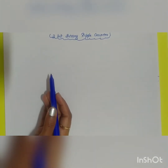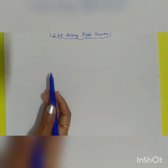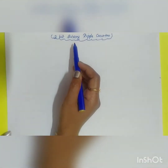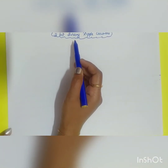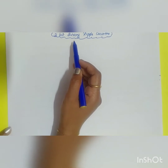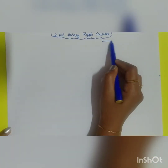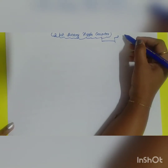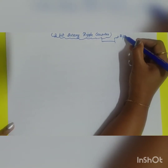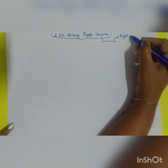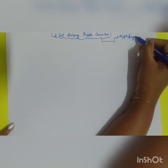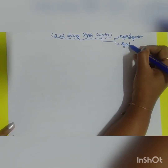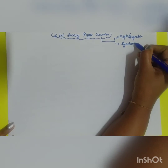3-bit binary ripple counter. A counter is used for counting the pulses. It is also a group of flip-flops with a clock signal. This counter can be divided into two types: one is the asynchronous counter, also called a ripple counter, and the other is the synchronous counter.